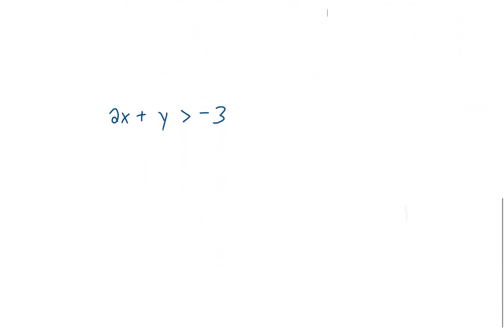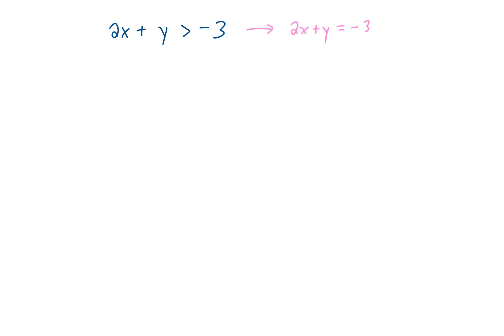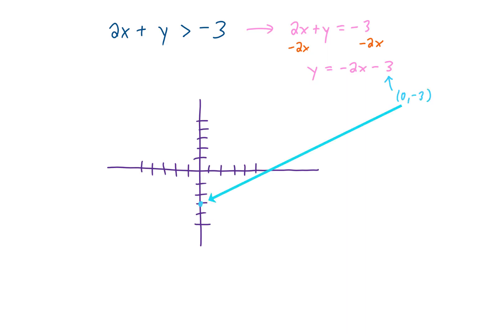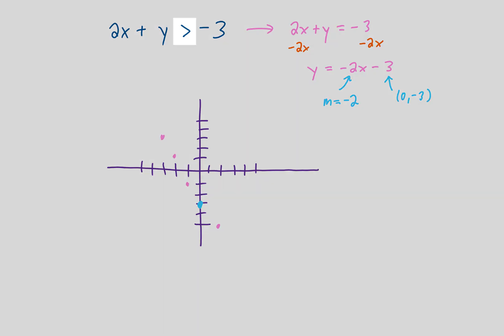Let's do one more example. Here the inequality is not in slope-intercept form, so let's put it in that form by subtracting 2x from both sides. The 2x's on the left cancel, leaving y by itself, and on the right we get negative 2x minus 3. Now we have the equation in slope-intercept form. We start at the y-intercept, the point (0, −3), down here. The slope is negative 2, so from (0, −3), going right 1 unit means going down 2 units, and from the y-intercept going up 2 units means going left 1 unit. Because we have a strict greater than sign, we use a dashed line.